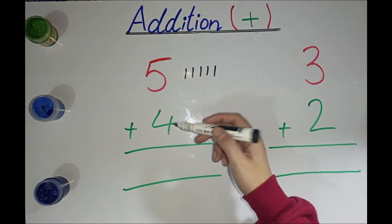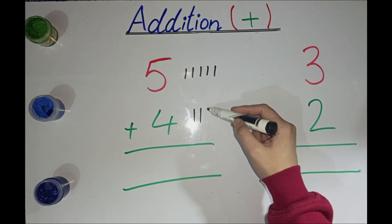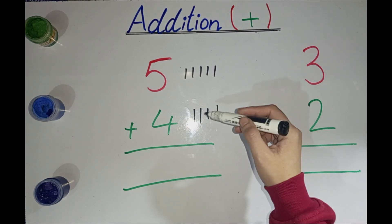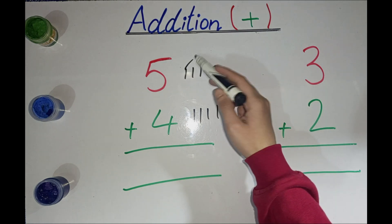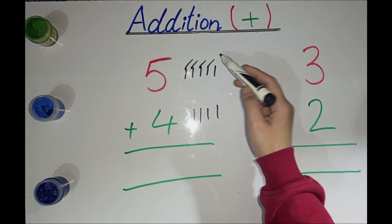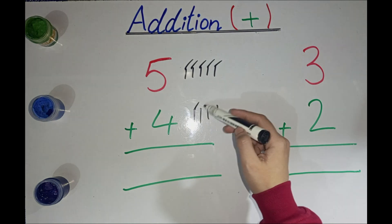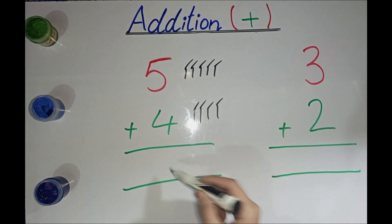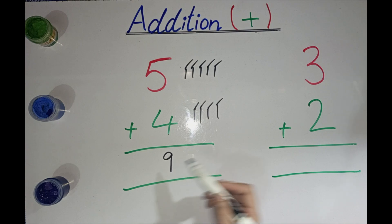What is this number? 4. Now make 4 lines: 1, 2, 3, 4. Now count all these lines: 1, 2, 3, 4, 5, 6, 7, 8, 9. Now write 9 here.